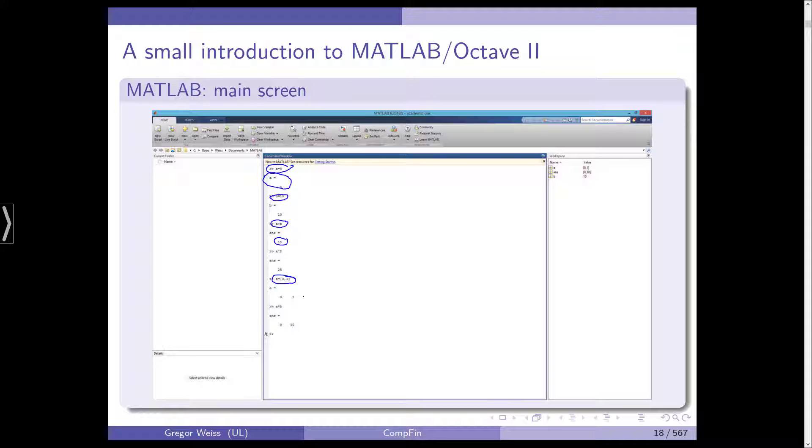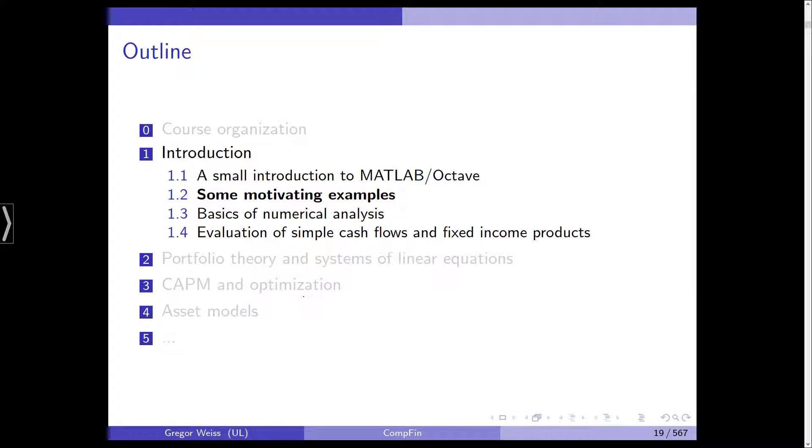And A in, now it's 0 comma 1 in brackets, and this gives you a two-dimensional vector. Well, this is all. So MATLAB is very, very simple. Try it out. And again, if you don't have a license, use Octave.